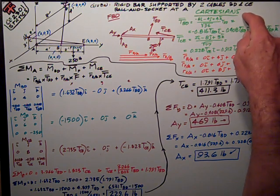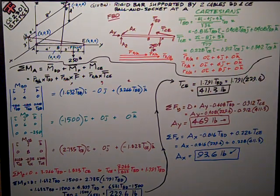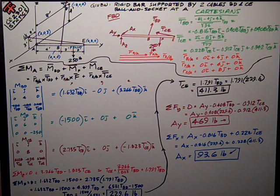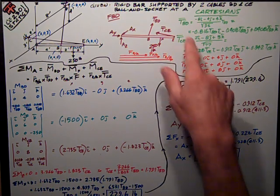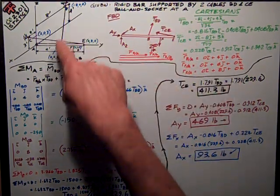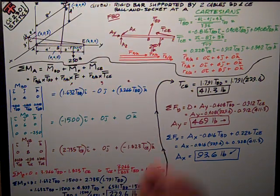The second is to get everything in Cartesian format. This is just in general for these 3D rigid body equilibrium problems. I express TBD, tension in that cable BD, as a Cartesian.